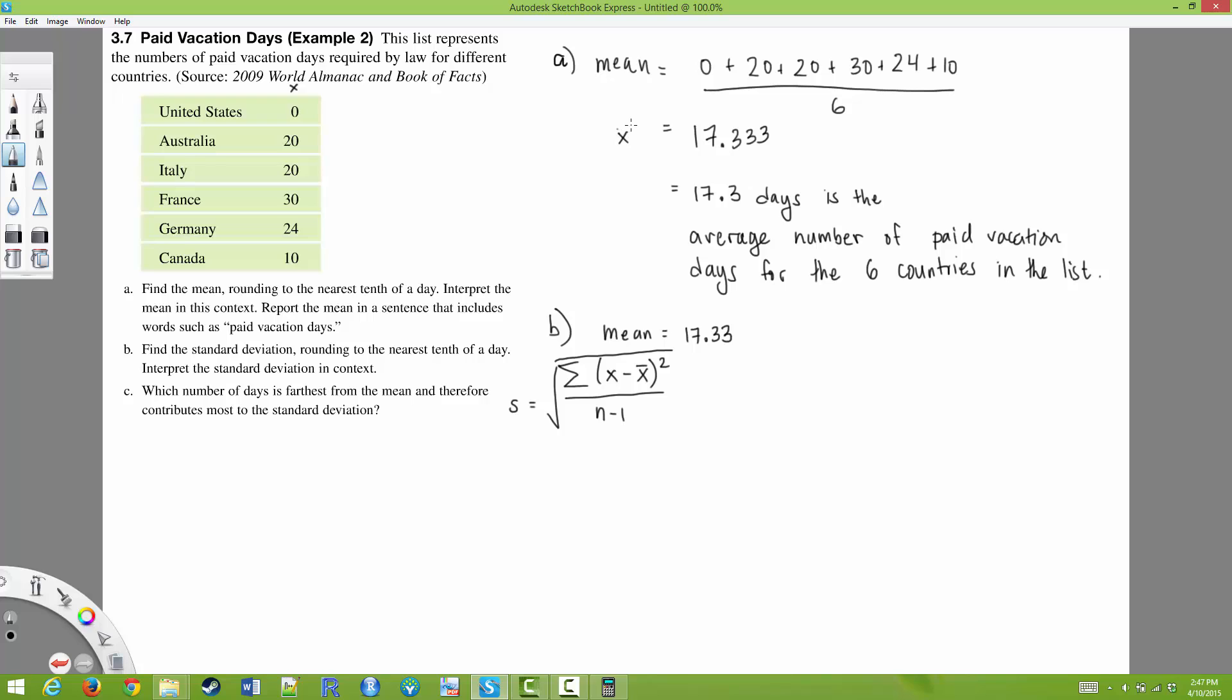Our mean is x bar 17.33. And so I'm going to find each of the differences or the deviations. So I'm going to do 0, 20, 20, 30, 24, and 10. And I'm going to subtract off 17.33 from each of these.